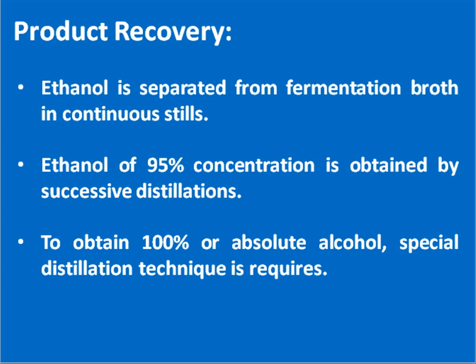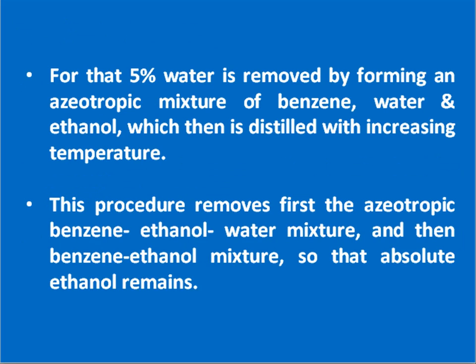The last and most important stage is recovery of the product. Ethanol is separated from the fermentation broth in continuous stills, and ethanol of 95% concentration is obtained by successive distillations. To obtain 100% or absolute alcohol, special distillation technique is required. For that, the 5% water is removed by forming an azeotropic mixture of benzene, water, and ethanol, which is then distilled with increasing temperature. This procedure removes first the azeotropic benzene-ethanol-water mixture and then the benzene-ethanol mixture, so that absolute ethanol remains. By that, we have completed discussion of each and every parameter of alcohol fermentation.